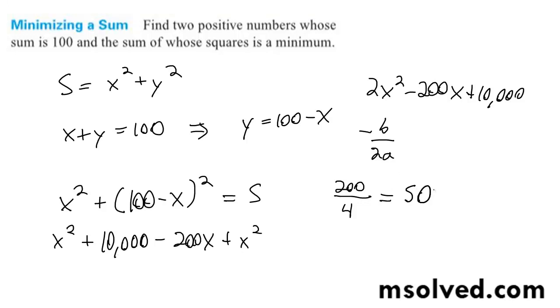So in this case, if one's 50, the other has to be 50 because they sum up to be 100. So the two numbers, because they can be the same, it's just going to be x is equal to 50 and y is equal to 50. And that is it.